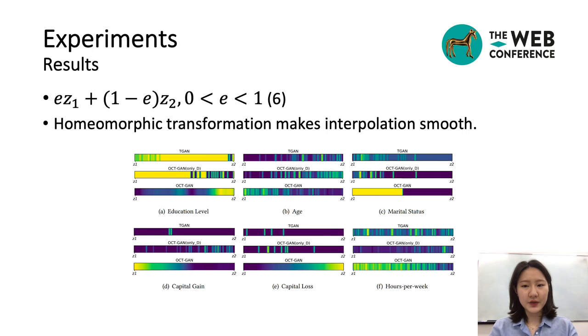Here is the visualization of the interpolation between the two noise vectors z1 and z2. We interpolated many intermediate vectors by following equation 6 about columns from other datasets. In our observation, OCTGAN can interpolate in a smoother way than other models.